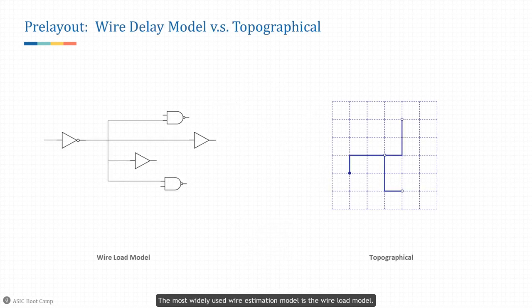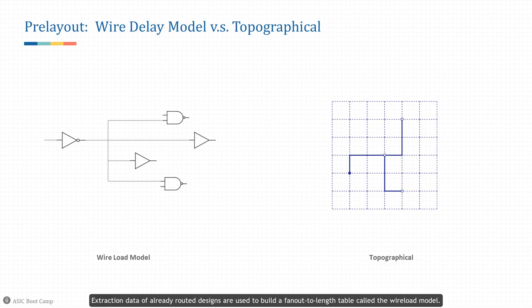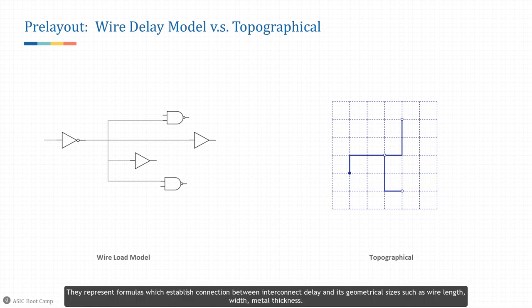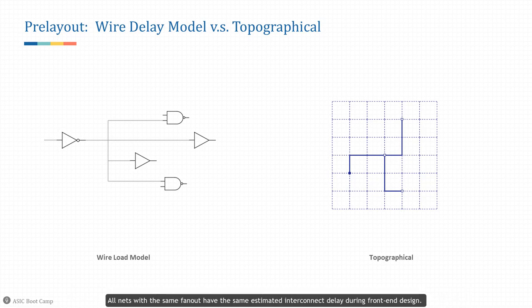The most widely used wire estimation model is the wire load model. RC values per unit length of the wire are obtained from the library. Extraction data of already-routed designs are used to build a fan-out-to-length table called the wire load model — representing formulas that establish a connection between interconnect delay and its geometrical sizes such as wire length, width, and metal thickness. All nets with the same fan out have the same estimated interconnect delay during front-end design.